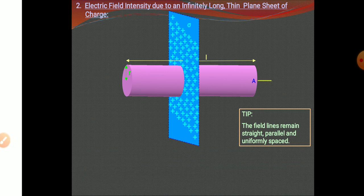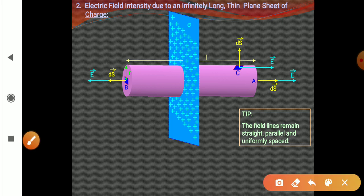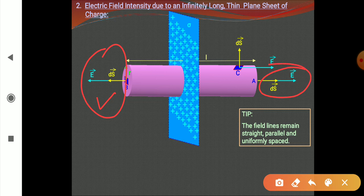Since this is an infinite sheet, electric field at every point will be directed away from it and it is going to be uniform. This Gaussian surface also has three surface areas: one curved and two plane surfaces. On both plane surfaces, area vector is directed outwards and electric field is also directed outwards — they are along the same direction. But at the curved surface, the area vector and electric field are at right angles.